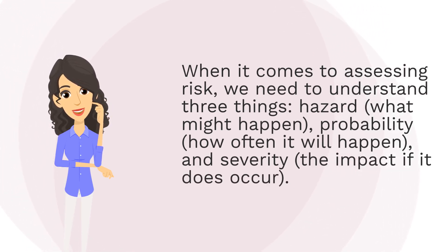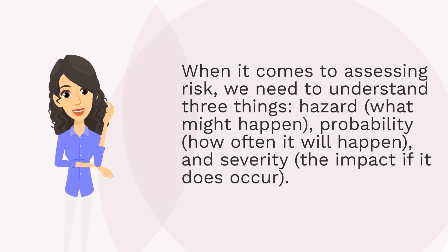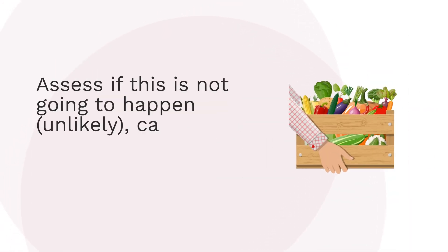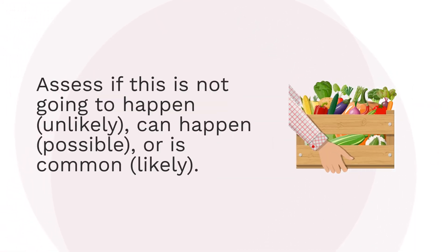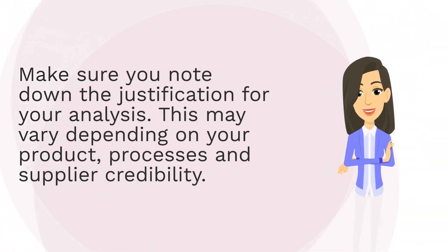Hazard — what might happen; probability — how often it will happen; and severity — the impact if it does occur. Assess if this is not going to happen (unlikely), can happen (possible), or is common (likely). Make sure you note down the justification for your analysis.